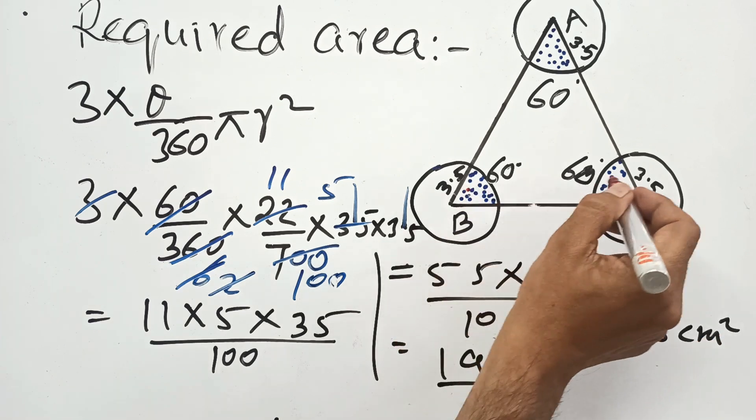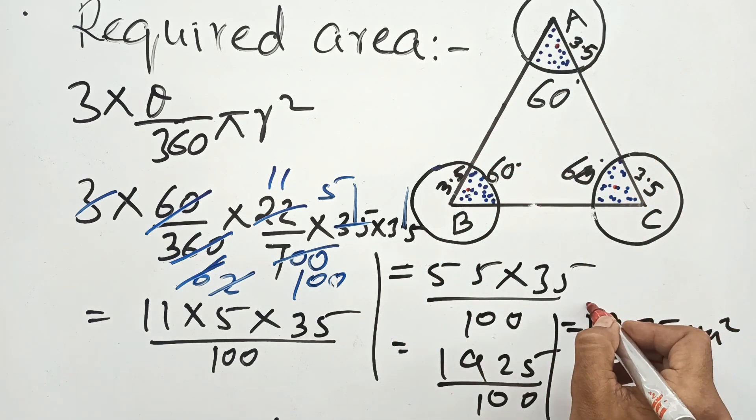So, sum of the areas of 3 shaded portions is 19.25 cm square. Thank you.